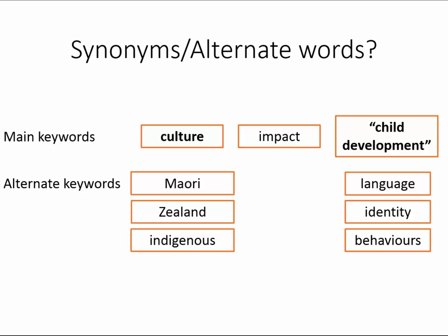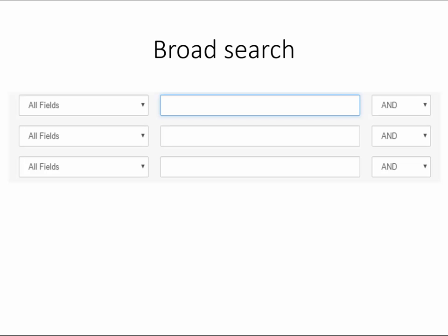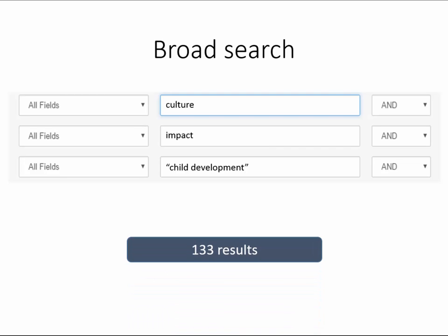It is recommended to start out with a broad search. This way you can see how much information is out there about the topic and always narrow your search if there are too many results. This search resulted in 133 results, which is not too bad, but still too many to read through.